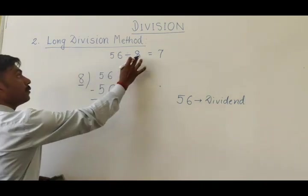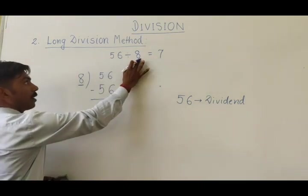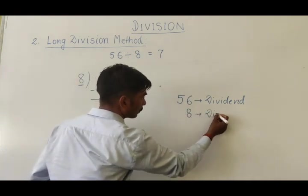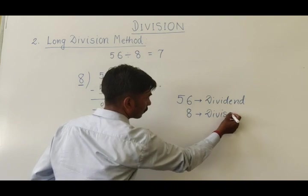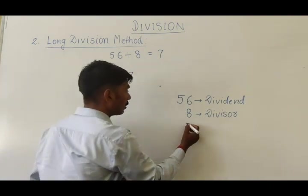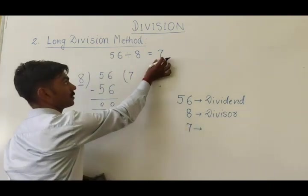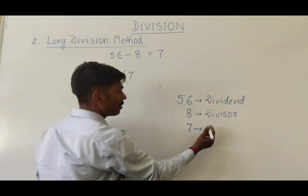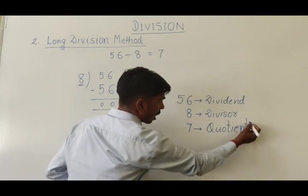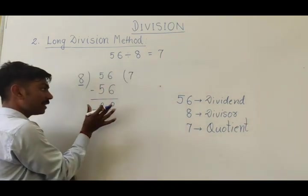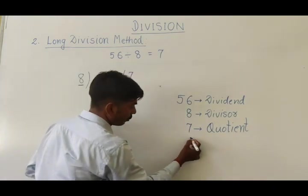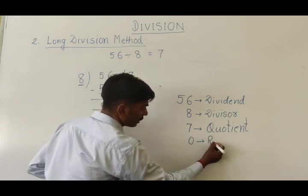And the number by which we are going to divide that number, this is called divisor. The answer of division is called, here in this case the answer is 7, so this 7 will be called quotient. And whatever is left after division, that is called remainder. But here we have got nothing, 0. So 0 is the remainder in this case.